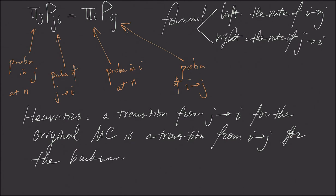can be seen as a transition from i to j for the backward. Let's say, let me use, let me use this reversed. This word reversed. Markov chain.